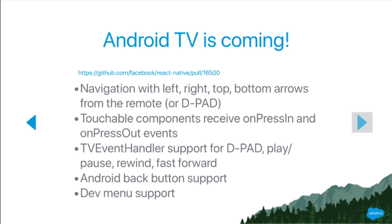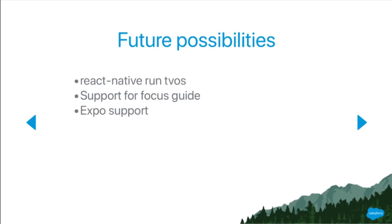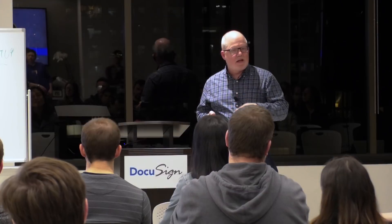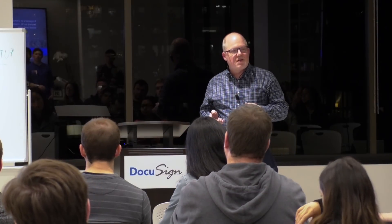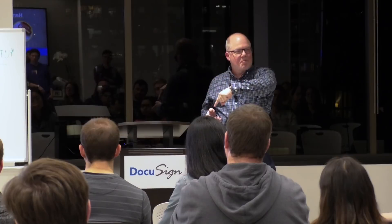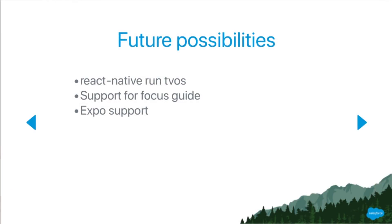For future possibilities: react-native run-ios works on the iOS simulator but does not yet work on the tvOS simulator. I've been requested to add support for the focus guide so you can give guidance to the focus engine as to the next view when moving the touchpad left, right, up, or down — without that guide, some views may be unreachable. I've also been talking to the Expo developers about Expo support, which is a fairly hard problem but I'm hoping to get done soon.